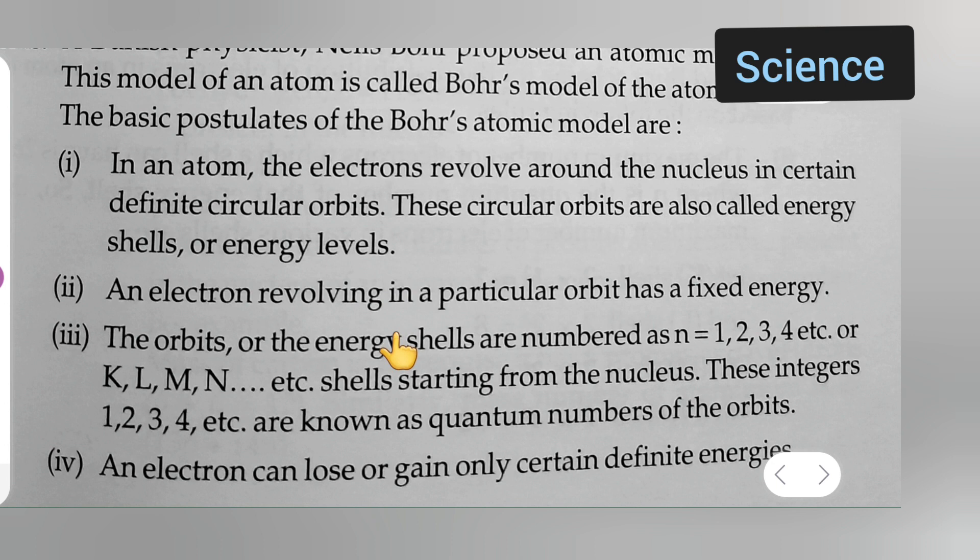Second point is: an electron revolving in a particular orbit has a fixed energy. The third point is: